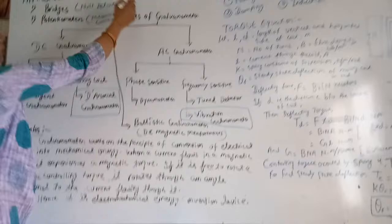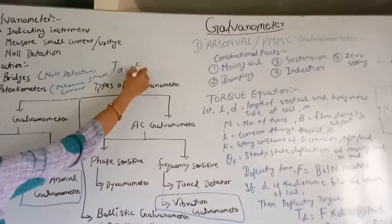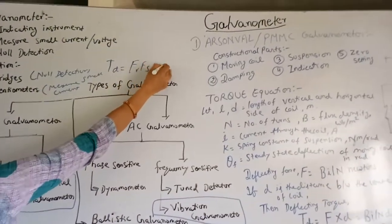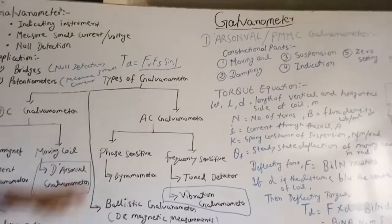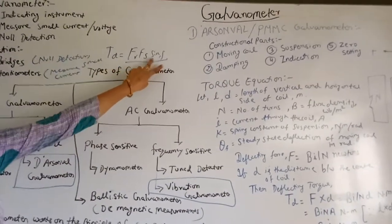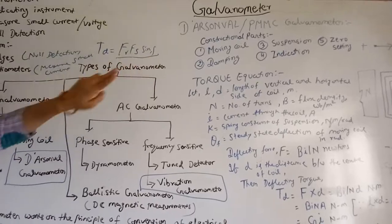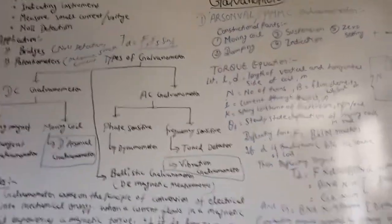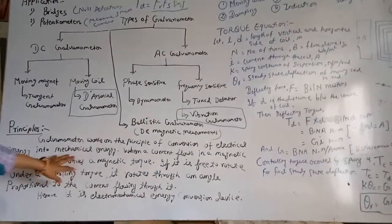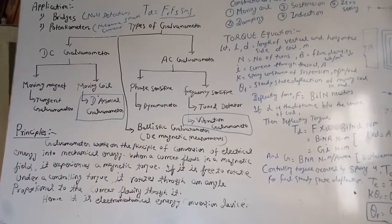As we know, the torque developed is F·R·S·sin(δ). That is, two fields are required here, and the angle between these two fields determines the torque developed in the coil. This is the principle of galvanometer.